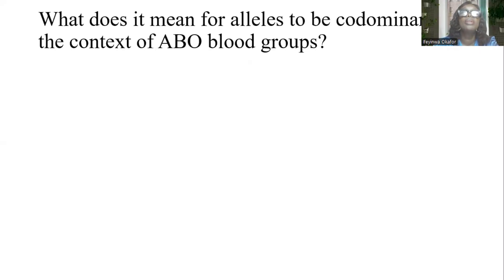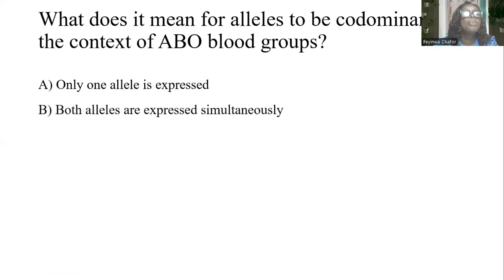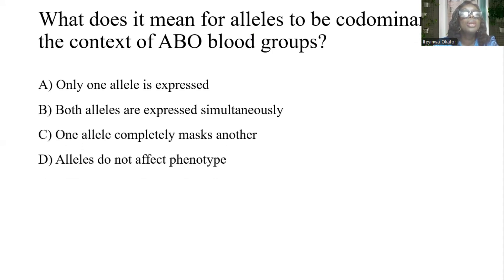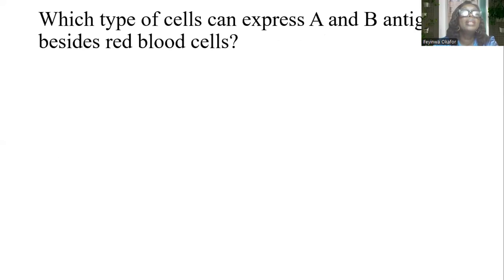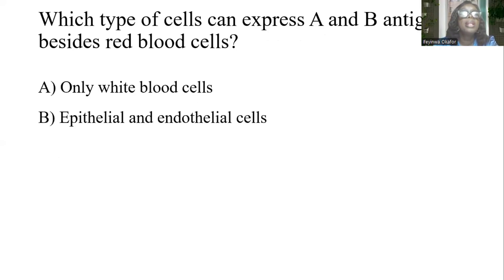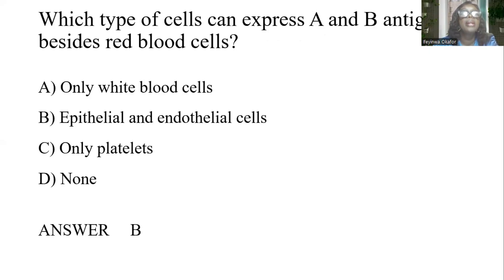What does it mean for alleles to be co-dominant in the context of the ABO blood group? A) Only one allele is expressed. B) Both alleles are expressed simultaneously. C) One allele completely masks another. D) Alleles do not affect phenotype. The answer is B: both alleles are expressed simultaneously. What type of cells can express AB antigens besides red blood cells? A) Only white blood cells. B) Epithelial and endothelial cells. C) Only platelets. D) None. The answer is B: epithelial and endothelial cells.